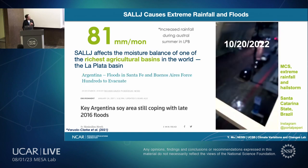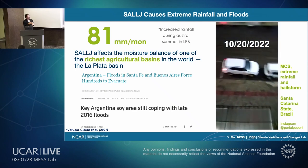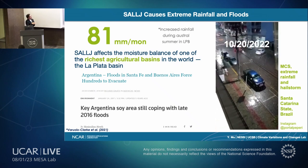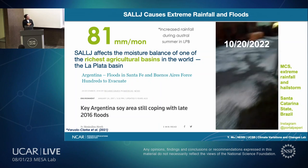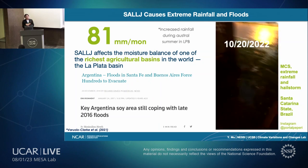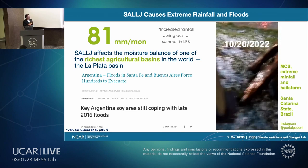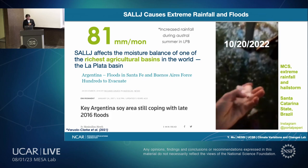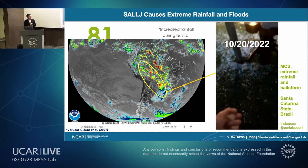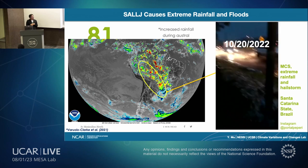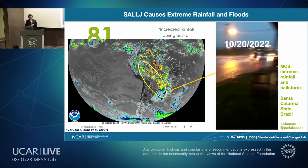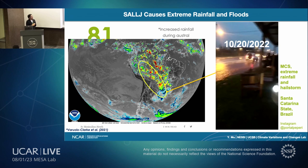SALLJ can also impact agricultural production — Argentina, for example, is on the left of the basin. Significant floods and extreme events can impact food production and many other climate extreme events. Here is satellite imagery showing the chain of mesoscale convective systems associated with a low-level jet event, located at the exit region of the low-level jet.